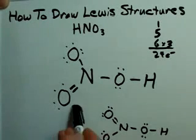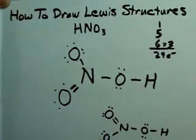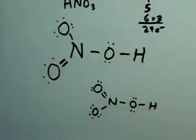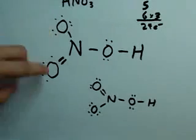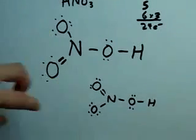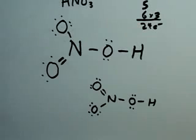We chose to move them from this oxygen here. You could have just as easily chosen for them to come off of this oxygen here, in which case you would get this Lewis structure. These are equivalent Lewis structures, and they are both acceptable.